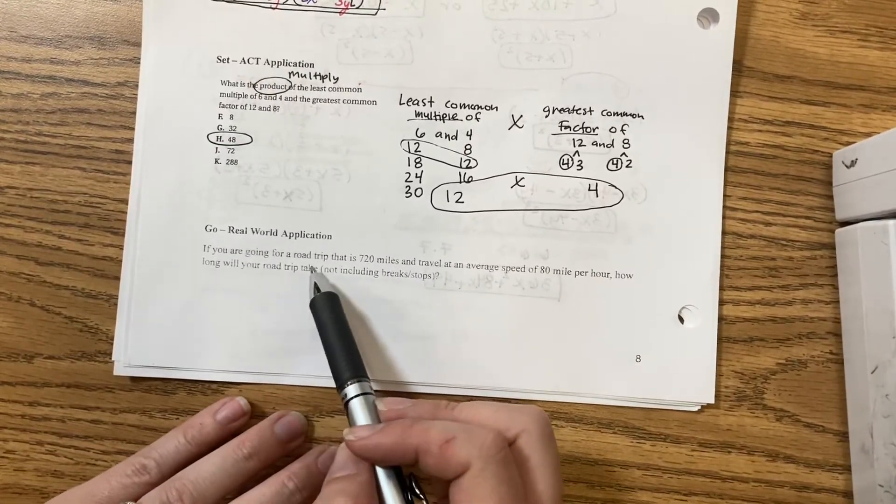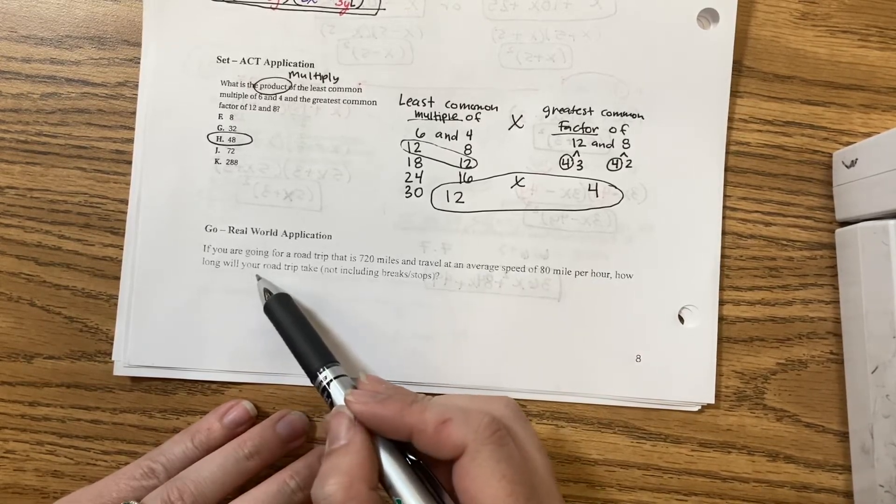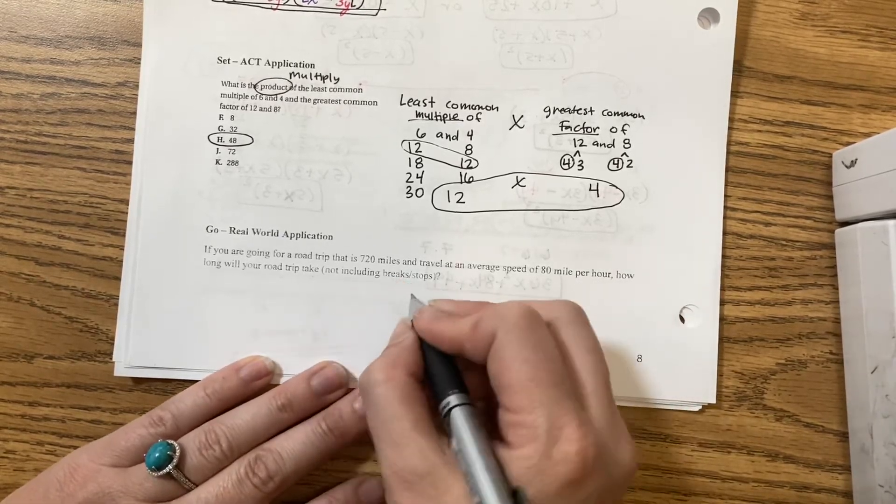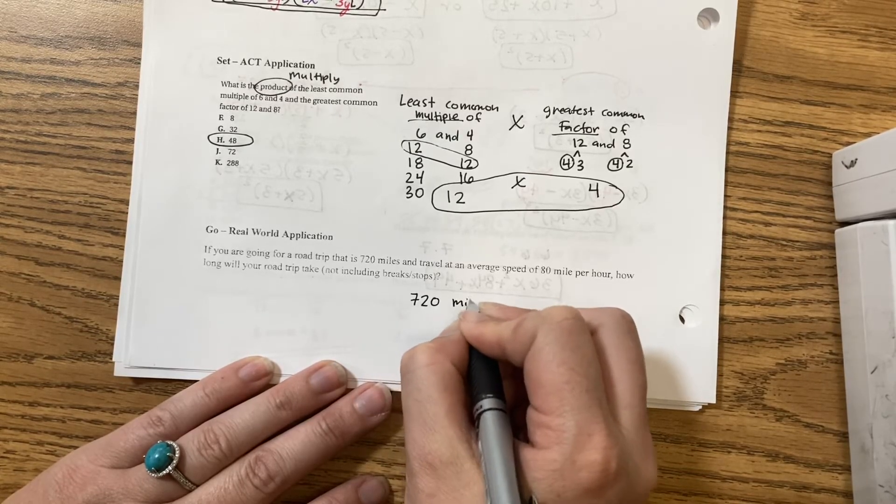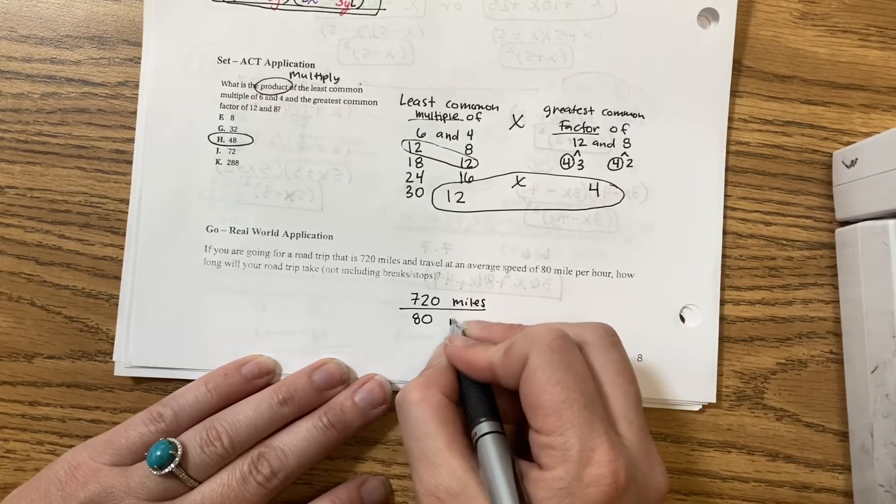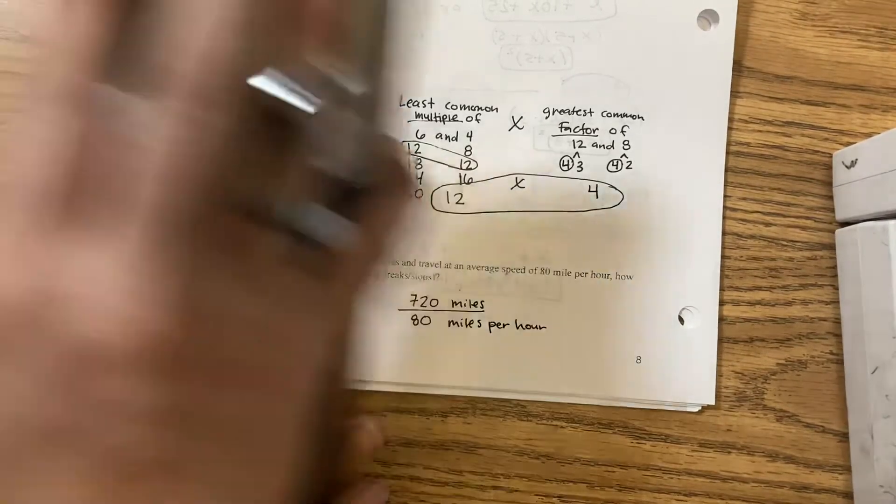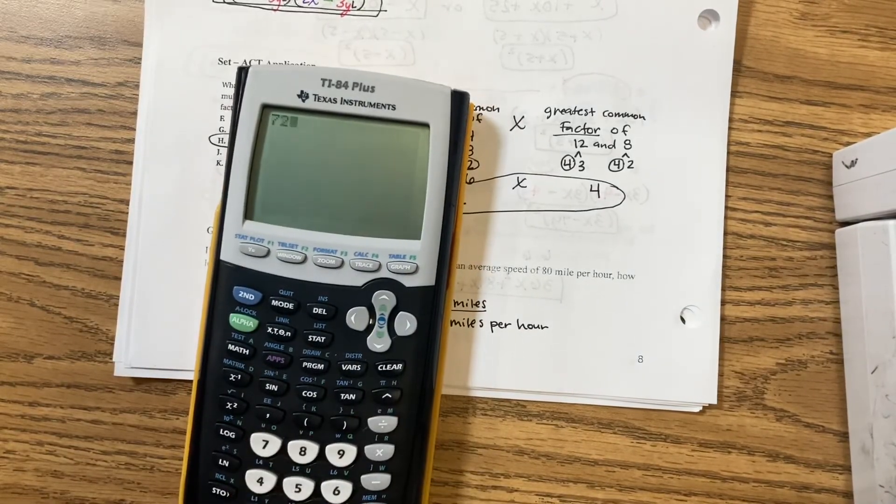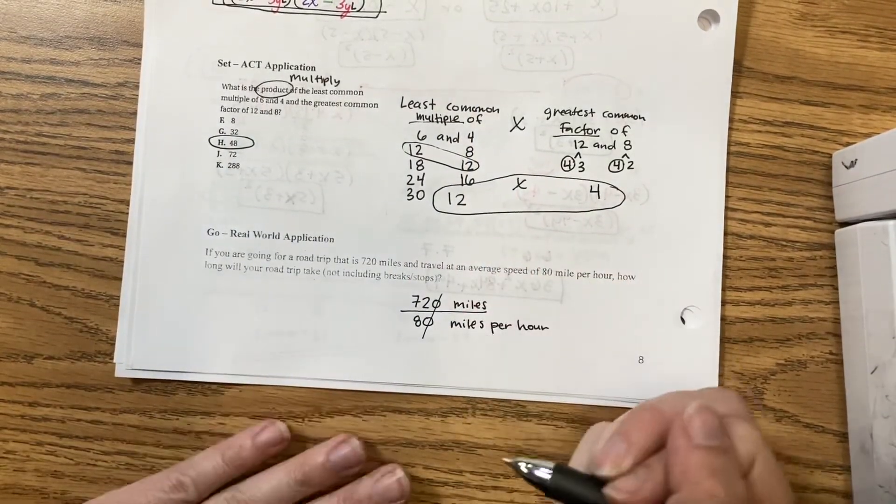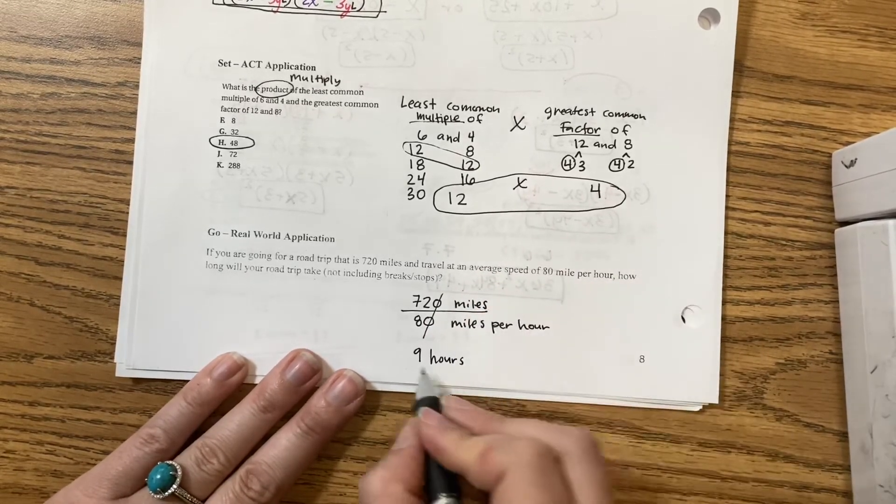If you are going for a road trip that is 720 miles and travel at an average speed of 80 miles per hour, how long will your road trip take? Not including breaks and stops. So, if you go 720 miles, you want to divide it by the 80 miles you're going per hour. So, then I would have 720 divided by 80 makes a 9. Shortcut. Zeroes cancel. 72 divided by 8 is 9 hours driving.